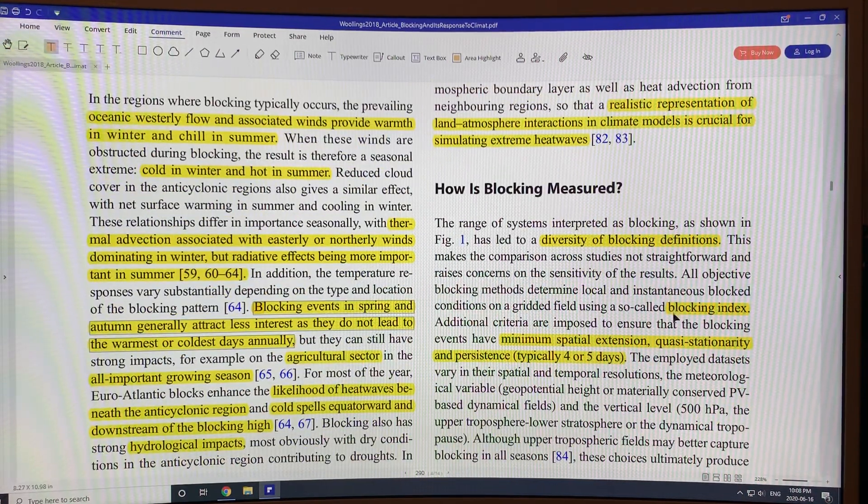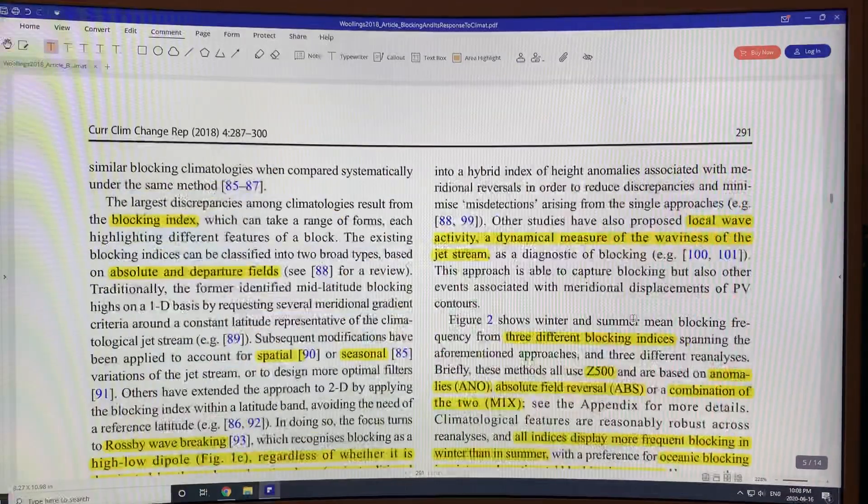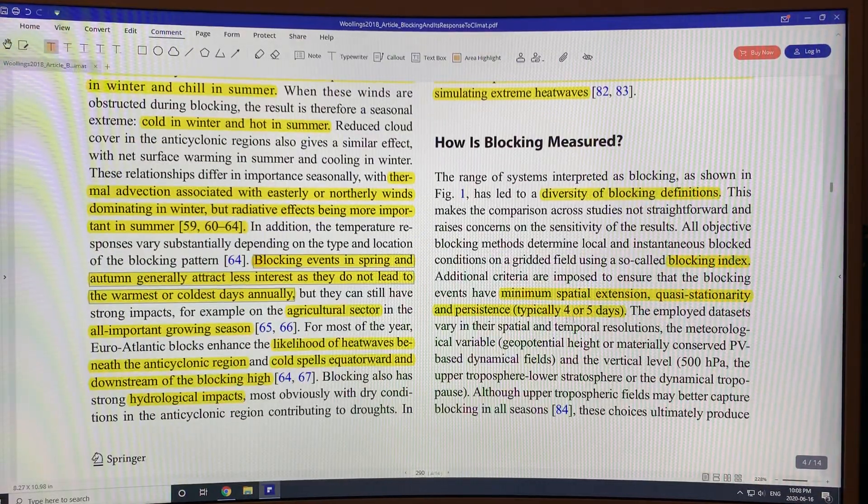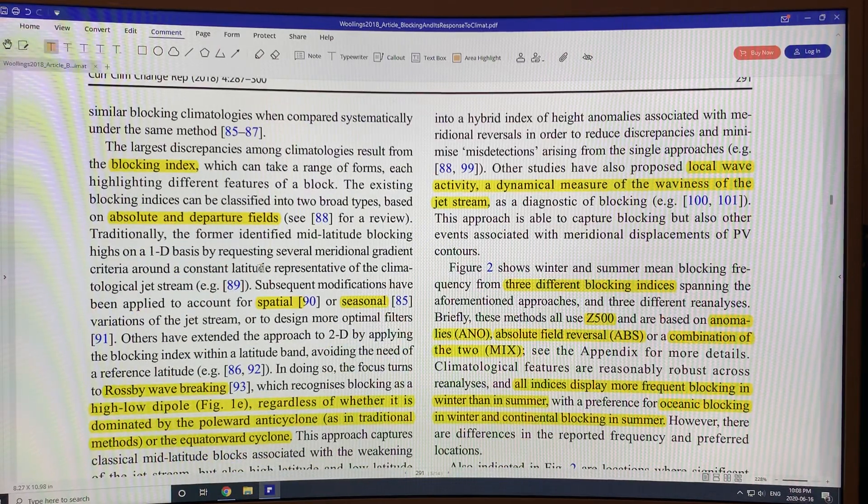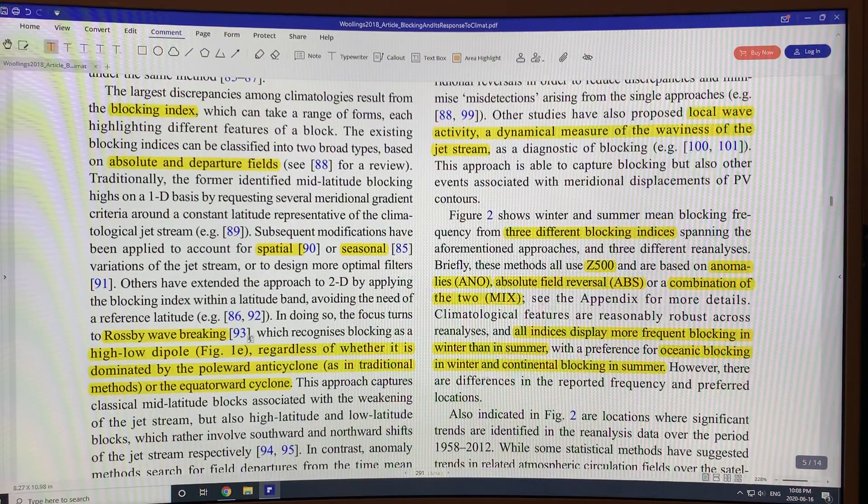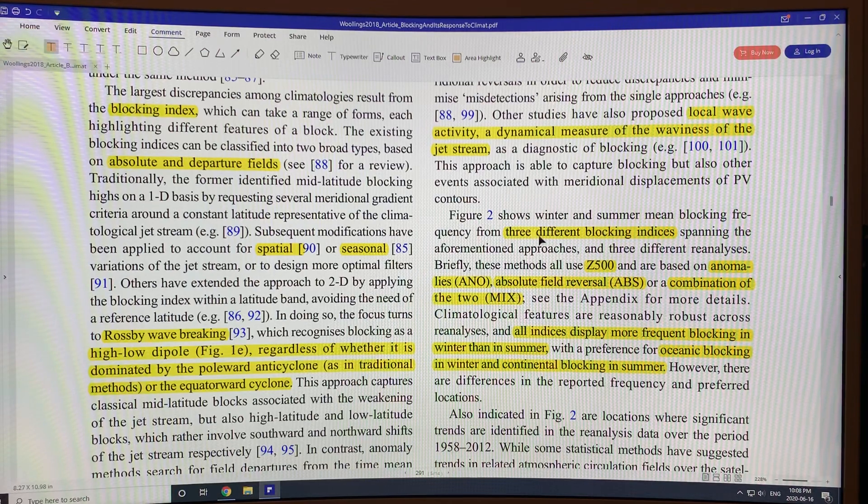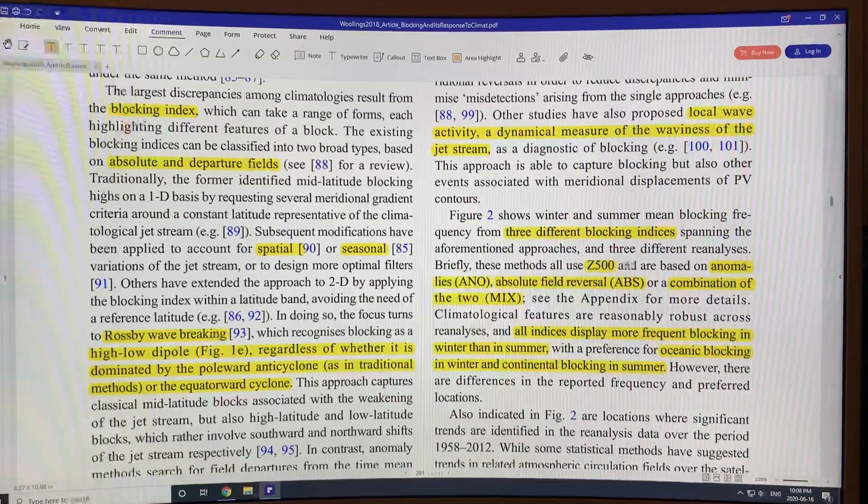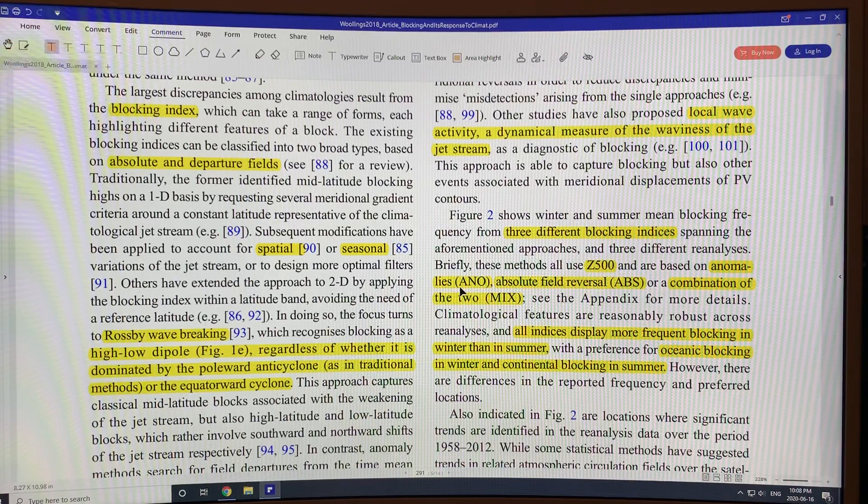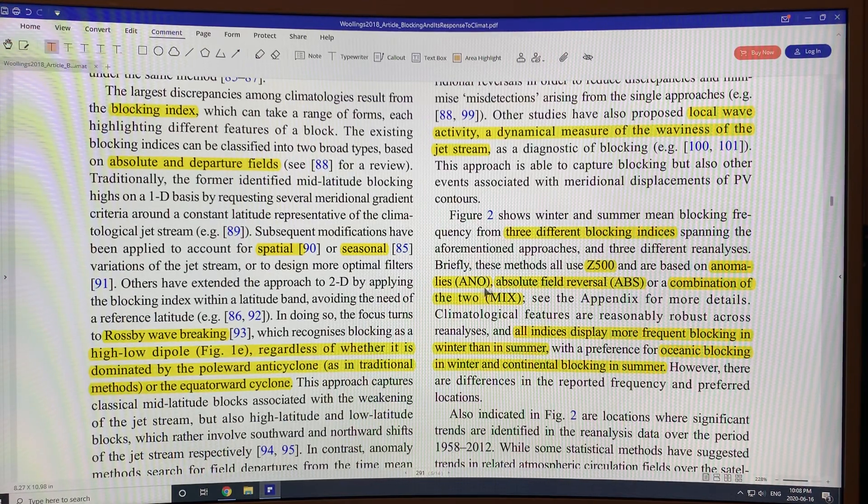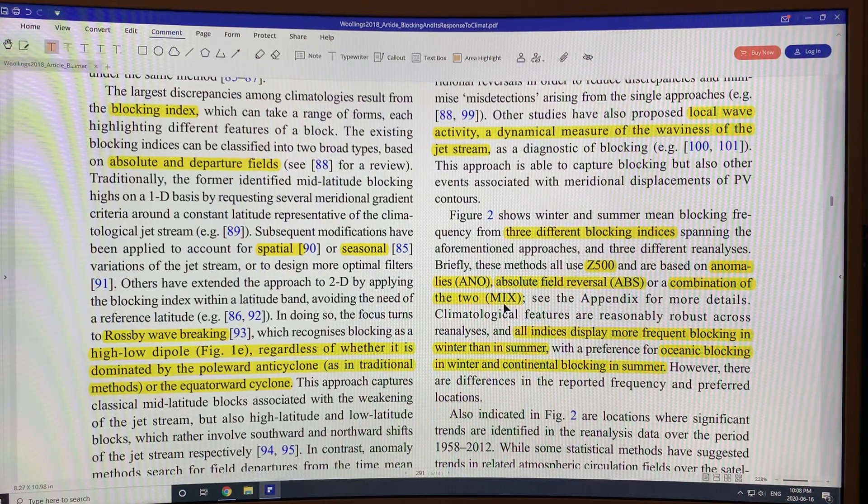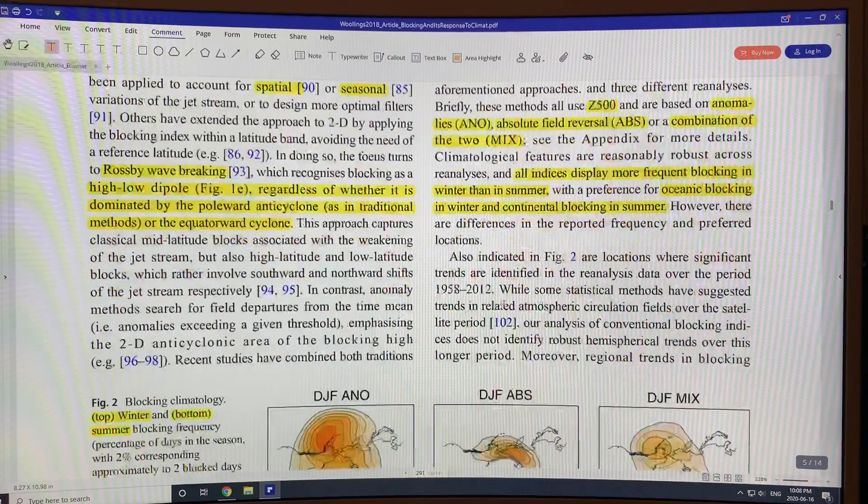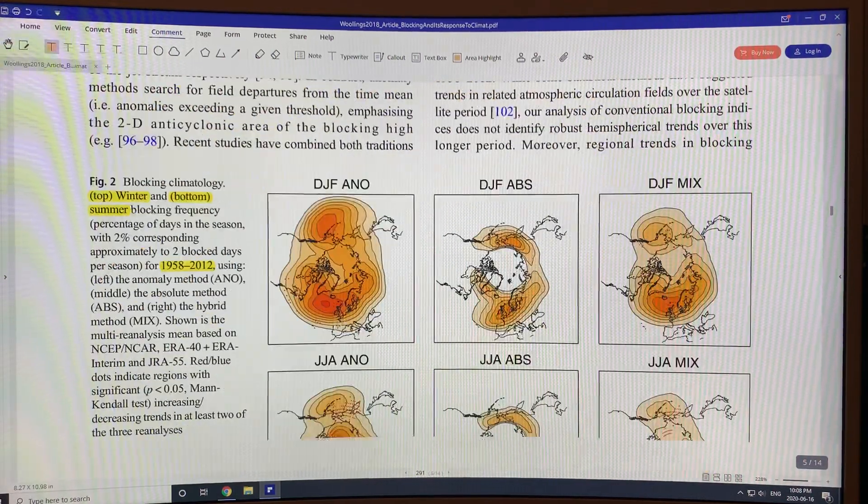Now, how do we measure the blocks? There's something called the blocking index. Because there's all these different types of blocks, there's many different types of blocking indexes. There's three different types of indexes. One is based on anomalies. There's absolute field reversal as a second one. And there's a combination of the two. That's the cat, by the way, just destroying stuff. So this is blocking climatology.